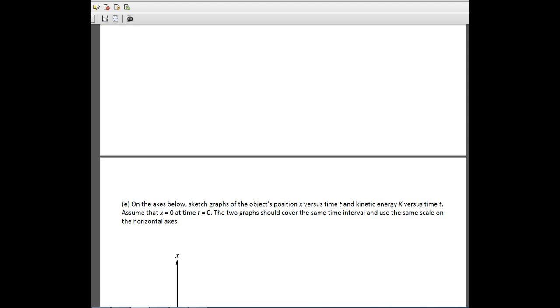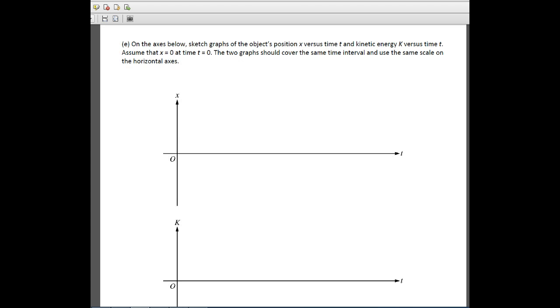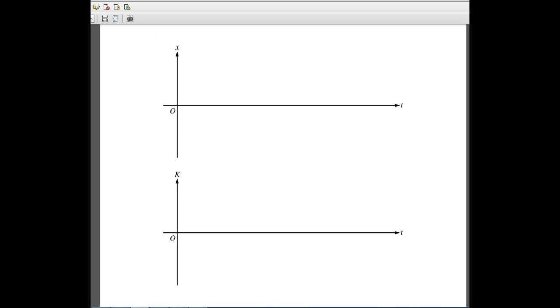Let's look at part E. Part E is the very last part. For this one, it says, on the axis below, sketch graphs of the object's position versus time and kinetic energy versus time. So they already have these things, and all we're doing is sketching. We're assuming that X equals 0 when the time is equal to 0. So they both start at X equals 0 and time equals 0, so we don't have to worry about doing anything weird there.